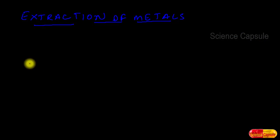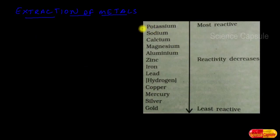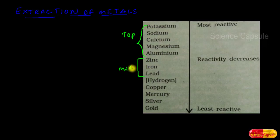Let us understand the extraction of metals. In the previous episode we saw the reactivity of metals in the activity series, where elements are arranged in decreasing order of reactivity. Based on the activity series, metals can be classified into three groups: first, those from potassium to aluminium at the top; second, metals in the middle; and third, metals which lie low in the activity series. Different extraction methods are used for each group.